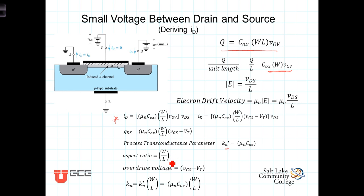The second term is known as the aspect ratio. It's just the width of the channel divided by the length of the channel. And finally, we've got the overdrive voltage, which is the amount the gate voltage exceeds the threshold.